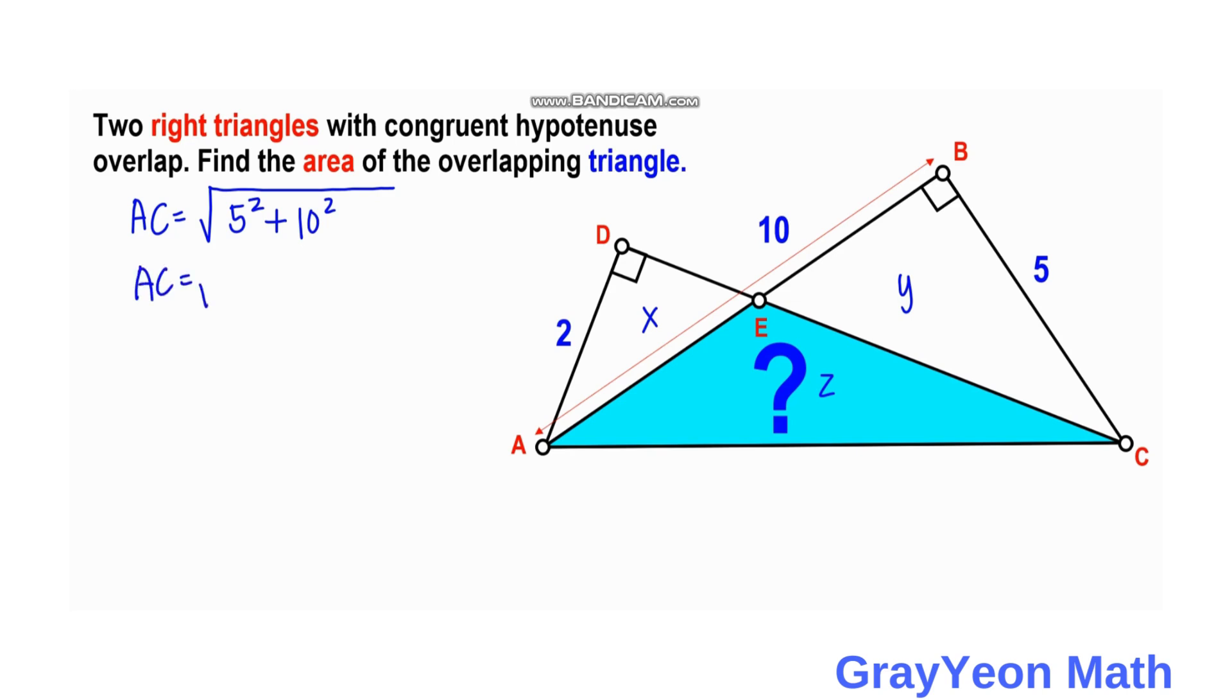AC equals 25 plus 100. AC equals the square root of 125, which can be written as 5 squared times 5. We can take out the 5 squared since this is a perfect square, so AC equals 5 square root of 5.